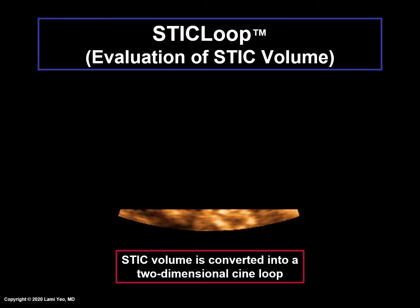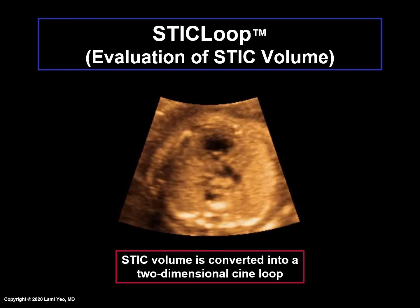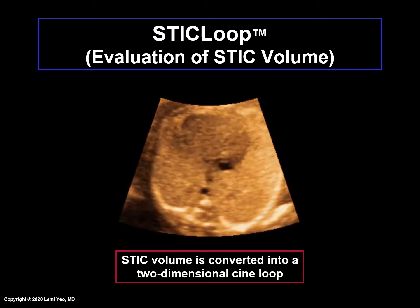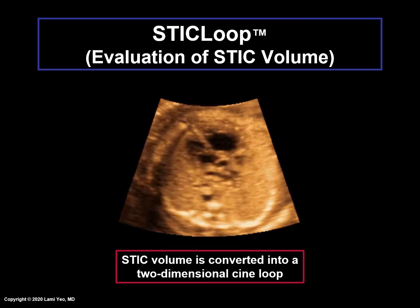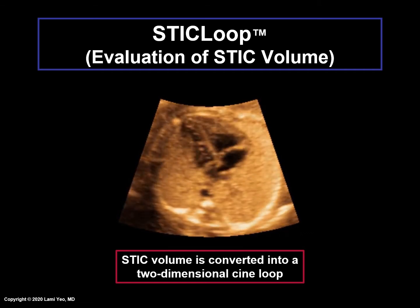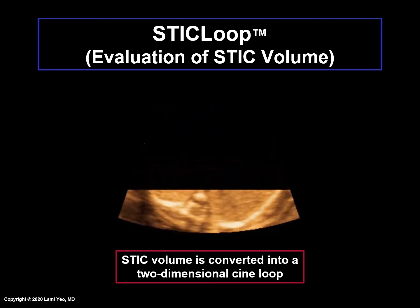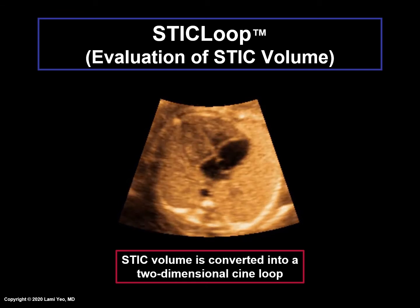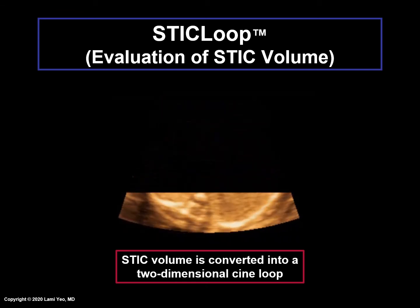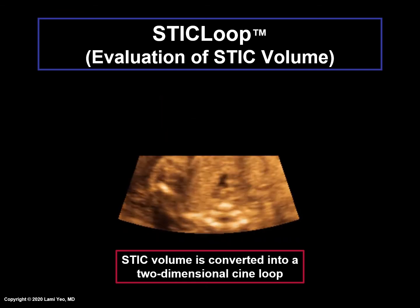With the FINE method, however, no multi-planar view is ever displayed. Instead, once a STIC volume has been acquired, the system will automatically convert the volume into a two-dimensional cine loop that scrolls in a continuous fashion, as shown here. This is why it is called a STIC loop. This is a tool that aids the user in determining the appropriateness of STIC volume data sets before implementation of the FINE method.